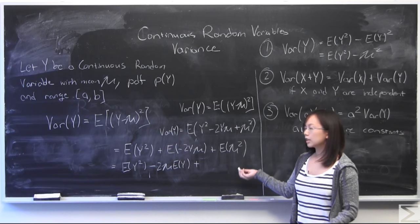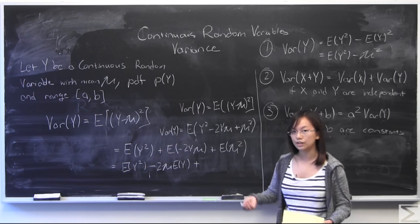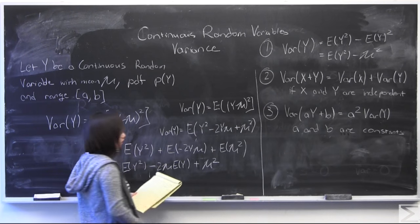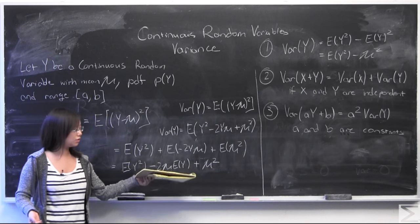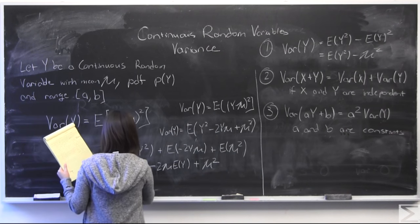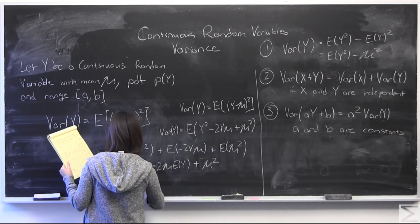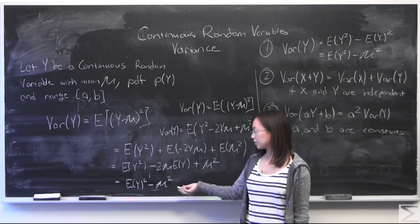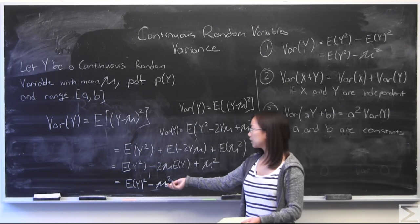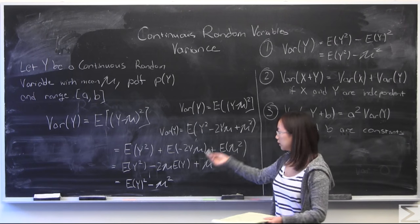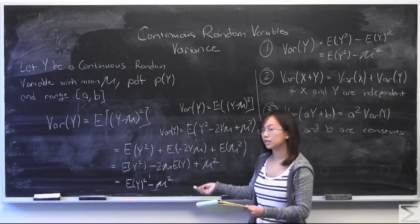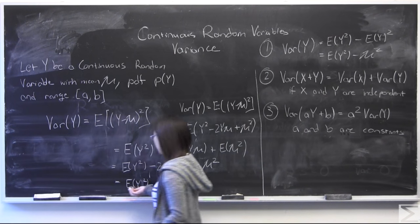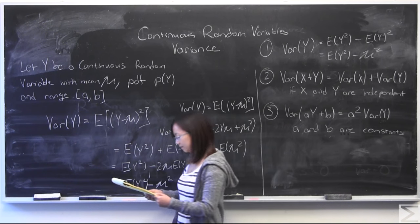I'm also going to use the fact that the expectation value of a constant, and mu squared is definitely a constant. I'm going to use the fact that we have defined mu as the expectation value of y, and I'm just going to combine terms. And now we have proven number one: the expectation value of y minus mu, quantity squared, is equal to the expectation value of y squared minus mu squared — or the expectation value of y squared minus mu squared. So that's number one.